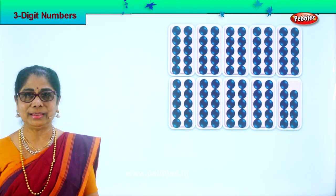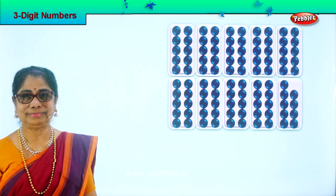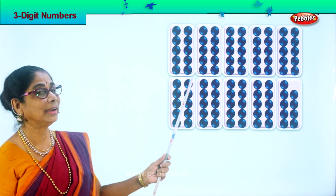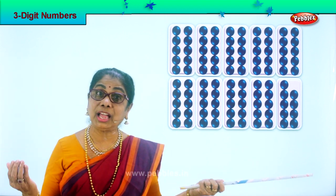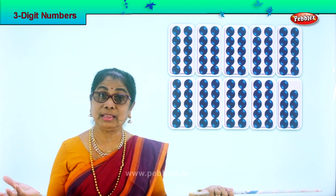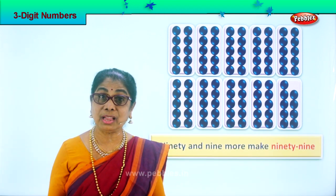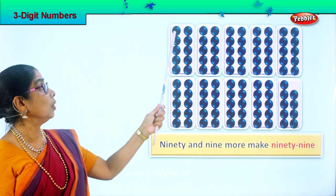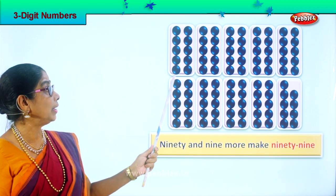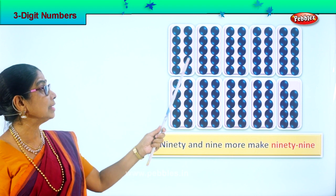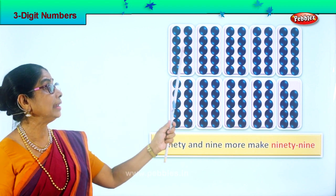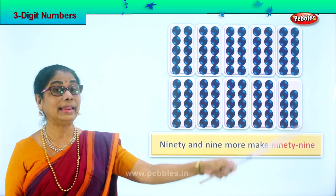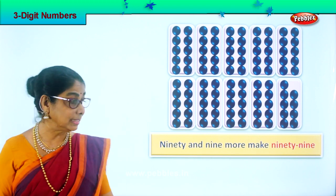Look at this. We are learning counting — we need to touch and count. Now look: one, two, three, four, five, six, seven, eight, nine, ten. There are ten in each group — ten, ten, ten, ten. Let's count all the tens.